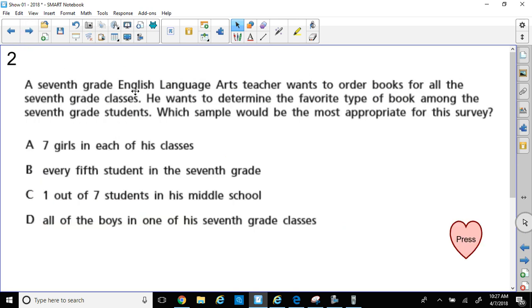A 7th grade ELA or English language arts teacher wants to order books for all of the 7th grade classes. She wants to determine the favorite type of book among the 7th grade students. So he wants to know what are the 7th grade students like. So which sample, so they're taking a group of people at random I hope, would be the most appropriate for this survey. Let's look at our choices.